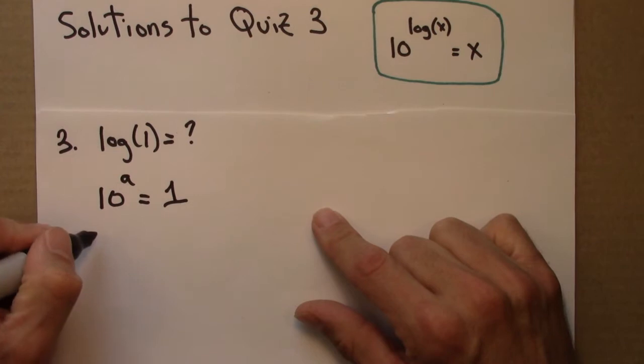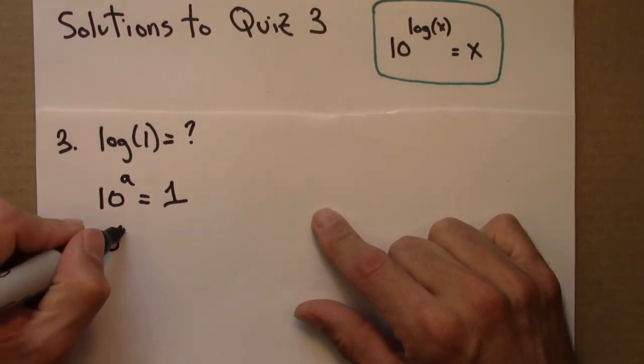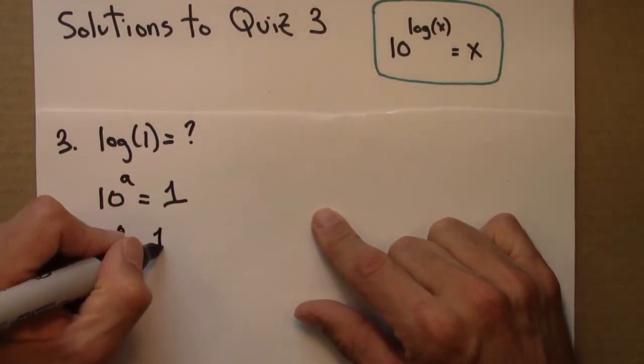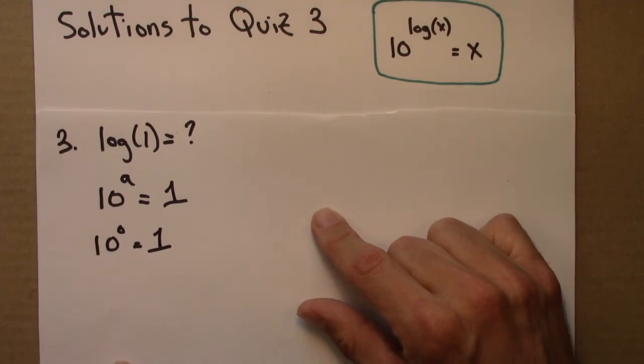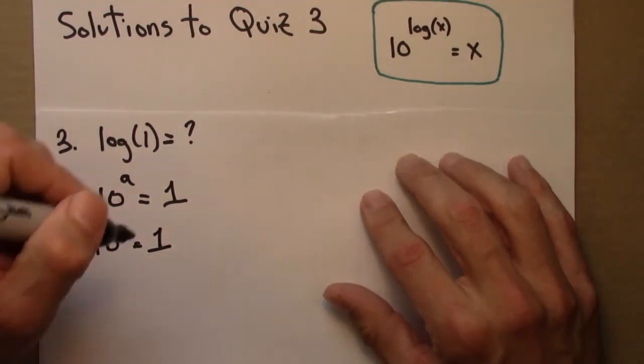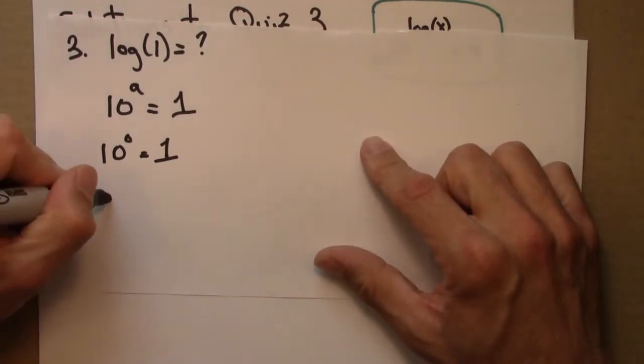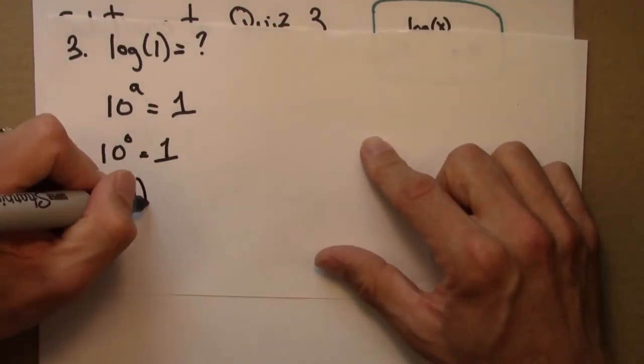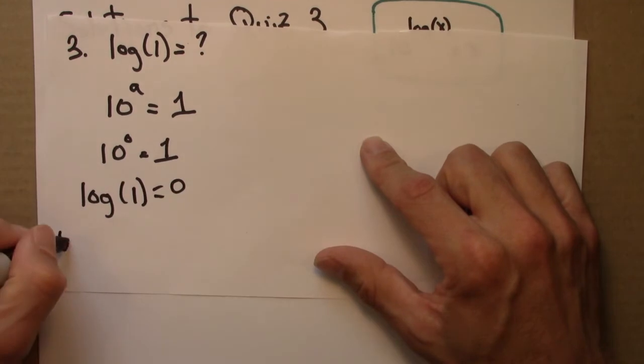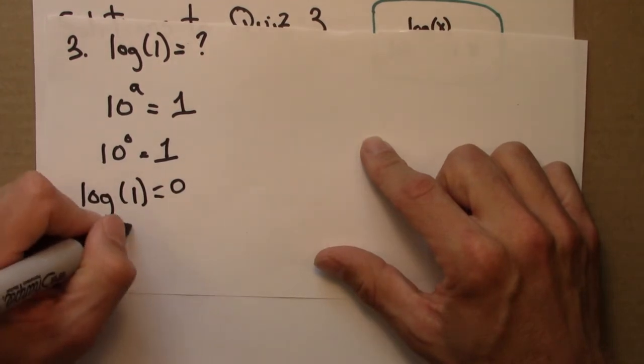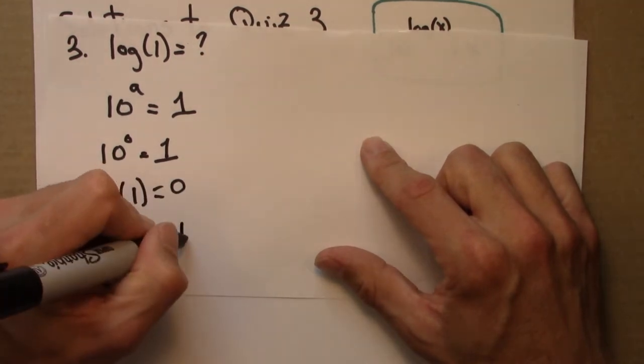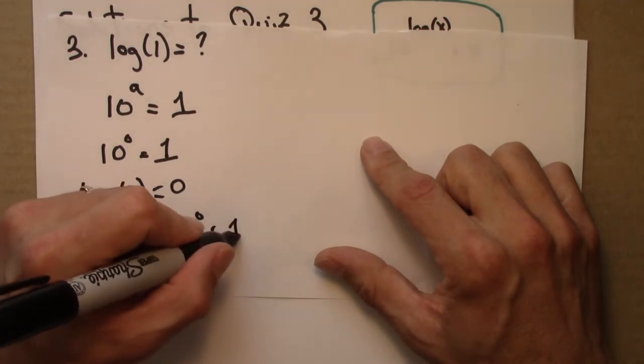So what do I have to raise 10 to in order to get 1? If we think for a second, we'll remember, oh hey, wait a minute. 10 to the 0 is 1. Anything to the 0 is 1, in fact. So that means that log 1 equals 0. And as usual, why? Because 10 to the 0 equals 1.